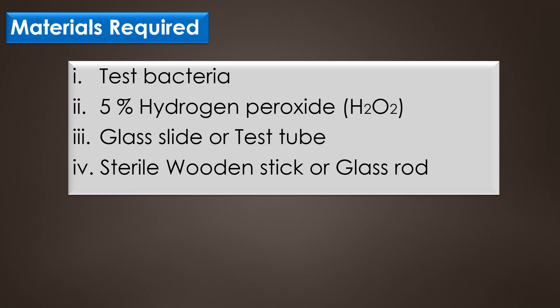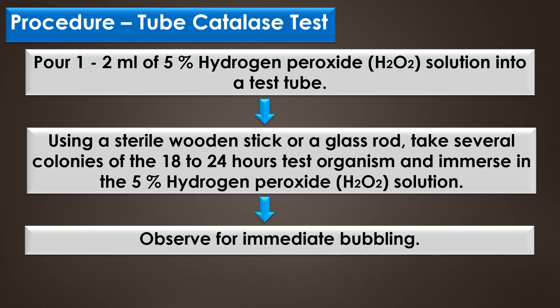The materials required for the catalase test are: test bacteria, 5% hydrogen peroxide, a glass slide or test tube, and a sterile wooden stick or glass rod.